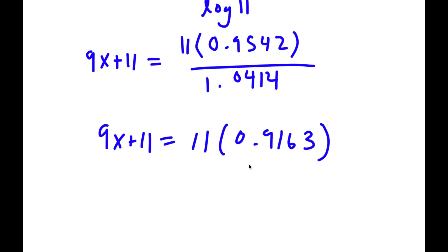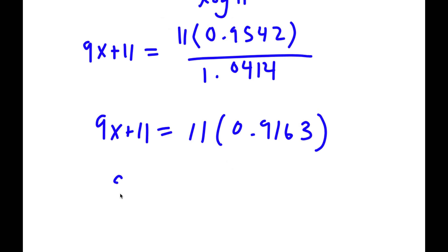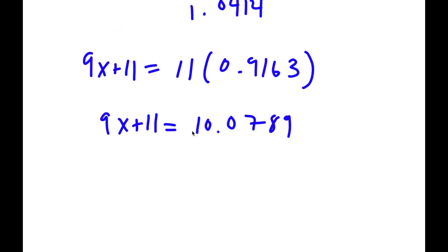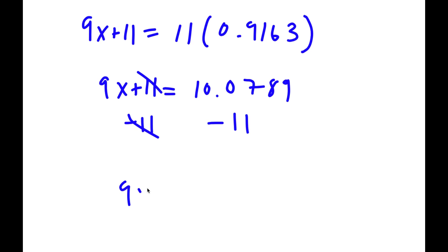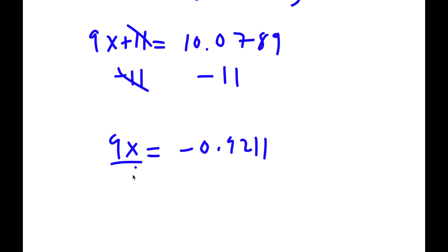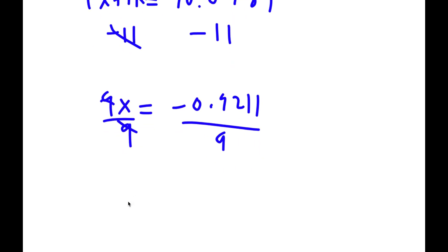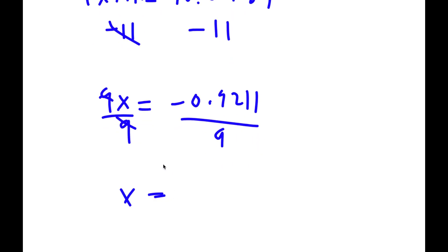And 11 times 0.9163 equals 10.0789. So now we have a simple equation. Subtracting 11 from both sides gives 9x equals 10.0789 minus 11, which is negative 0.9211. Dividing both sides by 9 gives x equals negative 0.1023.